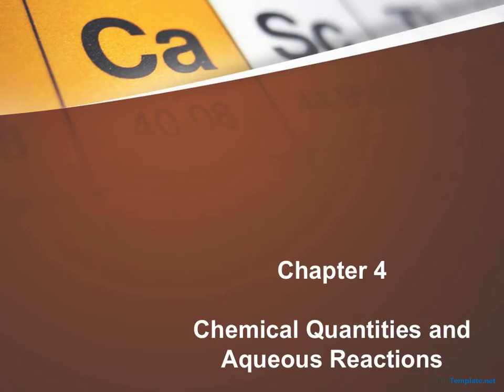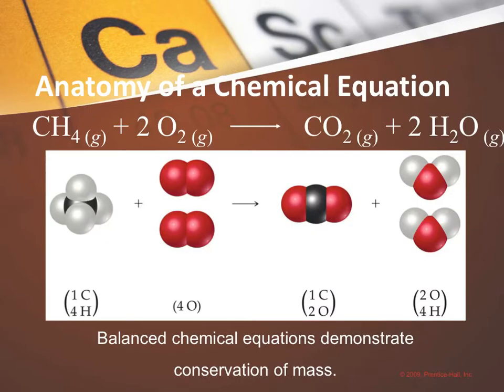This is the first lecture from Chapter 4, and this lecture is about stoichiometry. Before we start talking about stoichiometry, I'll remind you a little bit from Chapter 3 about how to read a chemical equation. We talked about how to balance a chemical equation and that the numbers and types of each atom have to be the same on both sides of the equation, and that's to satisfy the law of conservation of mass.